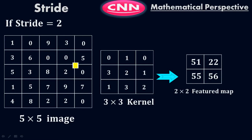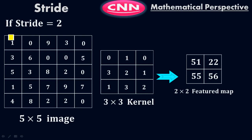This 2x2 feature map is a new version of the input image with a lower dimension. This symmetrical movement of the kernel or filter over the input image is what we call stride. Stride equals 1 means the movement of 1 column and 1 row, 1 column and 1 row. Stride equals 2 means leaving two columns, two rows, two columns, two rows. Similarly, stride equals 3 means the movement of 3 columns and 3 rows. That movement is called stride.